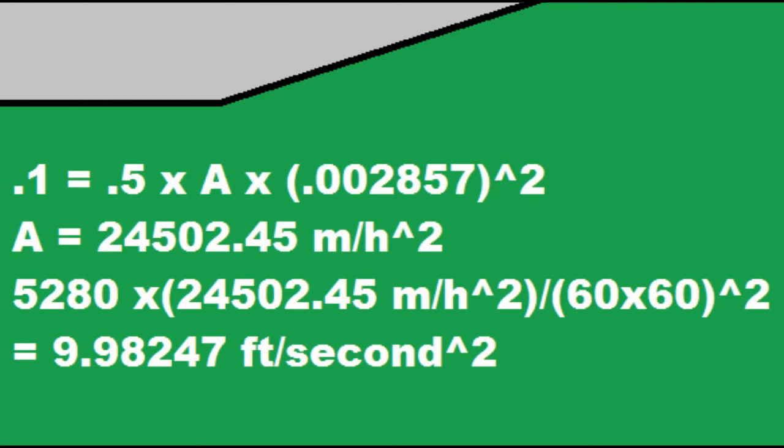So I don't know about you, but I think miles per hour per hour is a very ugly unit. So I converted it to feet per second per second. And I did this by multiplying it by 5,280 and dividing it by 60 times 60 to the second power. And this gives us 9.98247 feet per second per second.